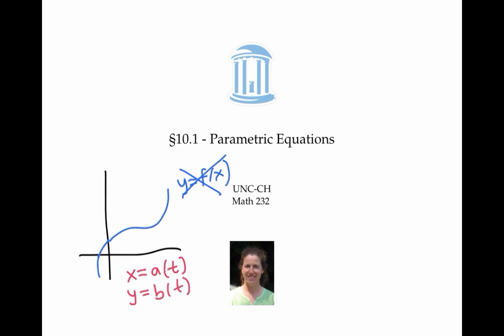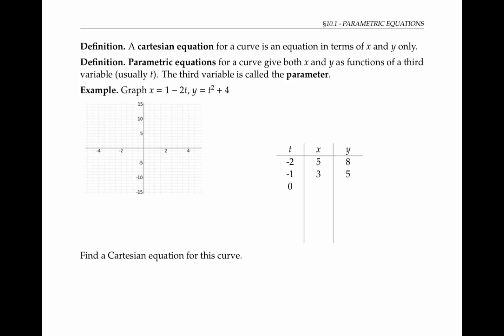This is especially useful as a way to describe curves that don't satisfy the vertical line test, and therefore can't be described traditionally as functions of y in terms of x. A Cartesian equation for a curve is an equation in terms of x and y only. Parametric equations for a curve give both x and y as functions of a third variable, usually t. The third variable is called the parameter.